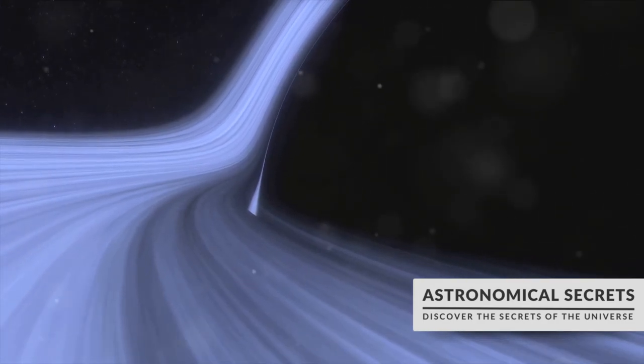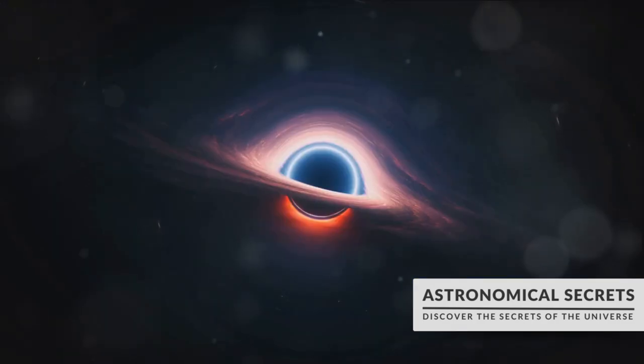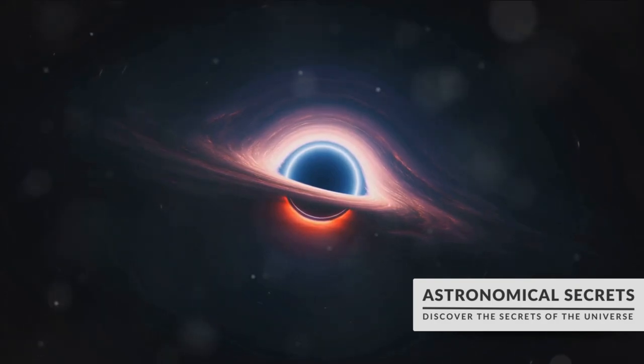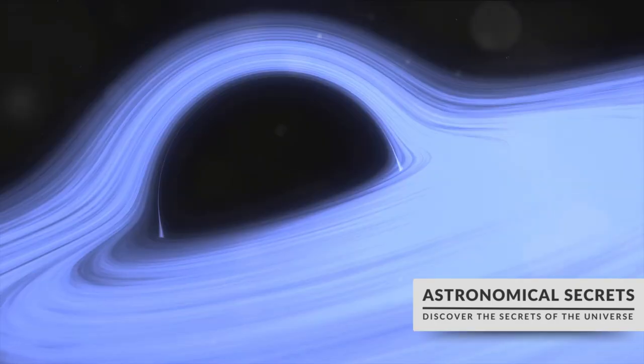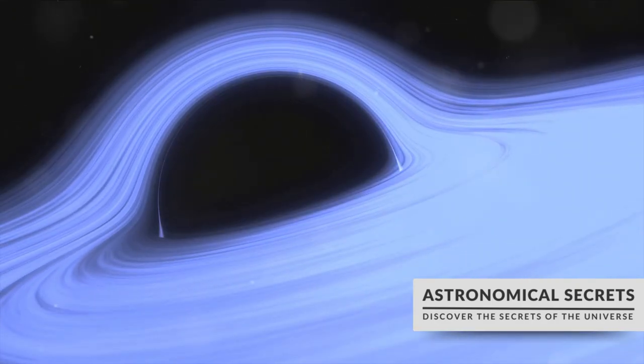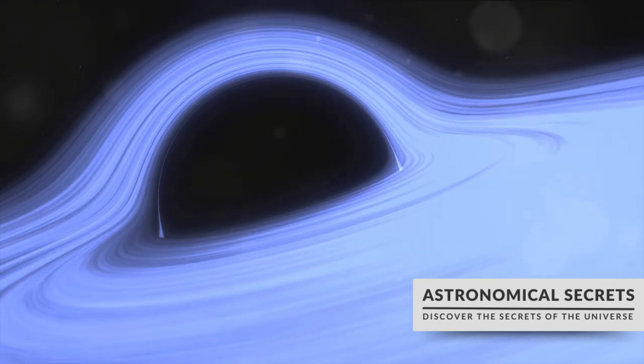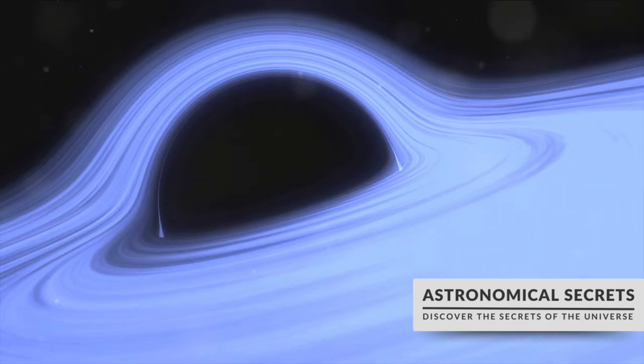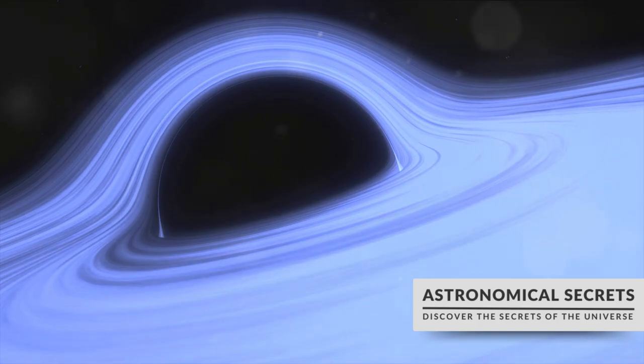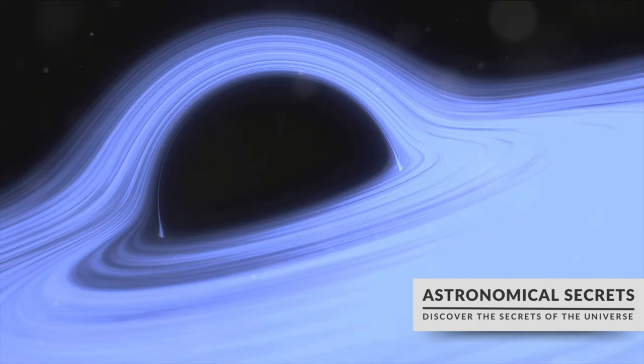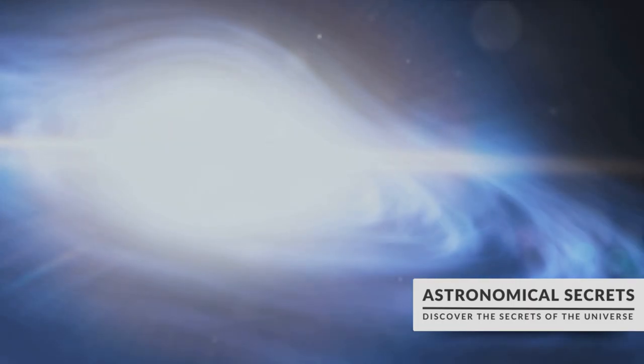But the influence of supermassive black holes doesn't stop at star formation. They can also affect the growth and evolution of their host galaxies. When matter falls into a black hole, it releases a tremendous amount of energy. This energy can heat up the surrounding gas, preventing it from cooling down and forming new stars. This process called feedback can limit the size of a galaxy, shaping its characteristics in evolution.